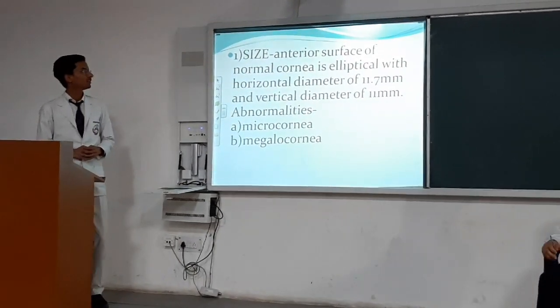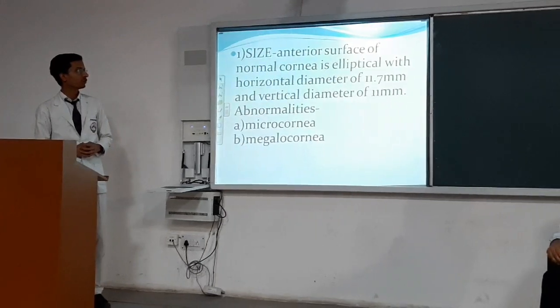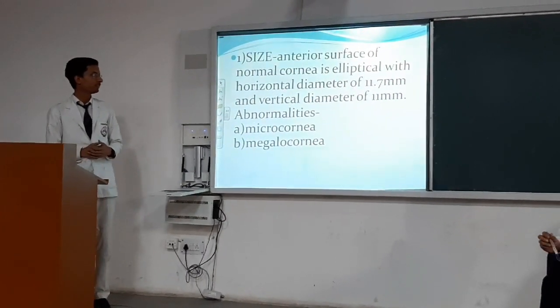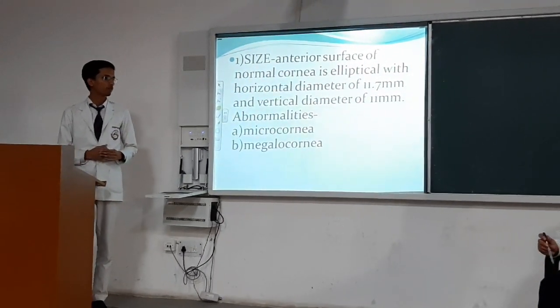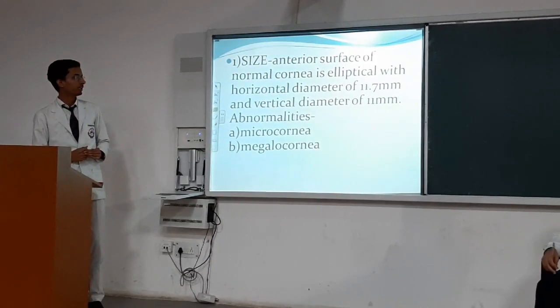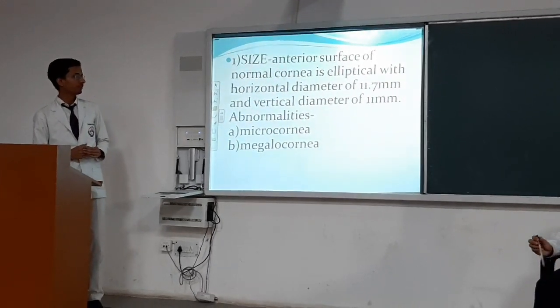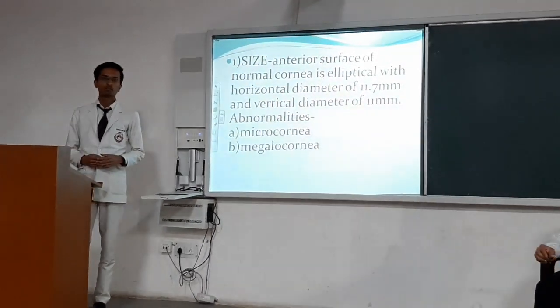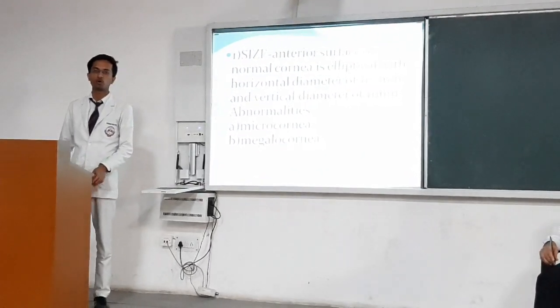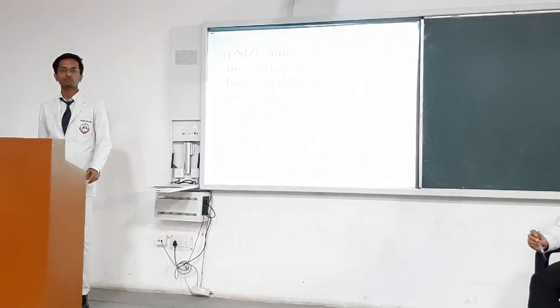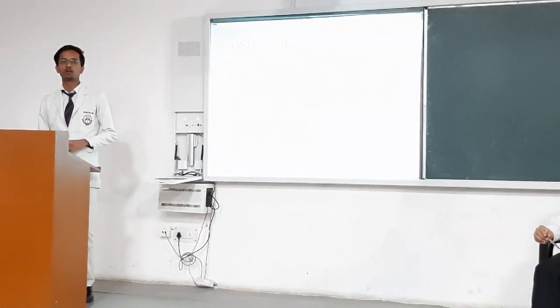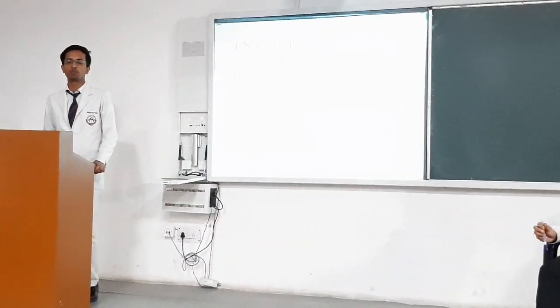Regarding size, the anterior surface of the normal cornea is elliptical with a horizontal diameter of 11.7 mm and a vertical diameter of 11 mm. Abnormalities in size can include microcornea, in which the anterior diameter of the cornea is less than 10 mm. Cornea size can also decrease in other abnormalities.